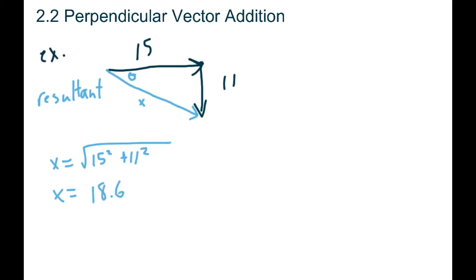Go back to the original question - it was 15.0 and 11.0, so we had 3 significant digits. We should keep our final answer in 3 sig digs as well. So we have 18.6 meters per second for our vector magnitude.